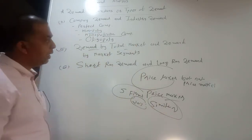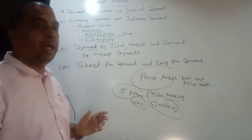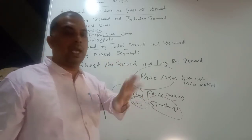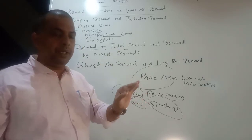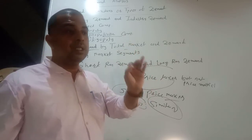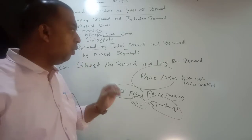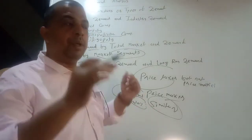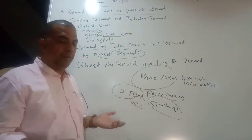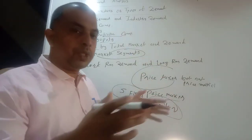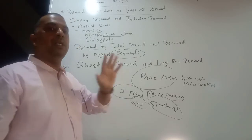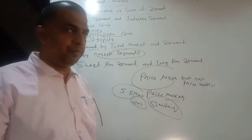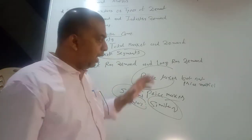Next: demand by total market and demand by market segment. Demand by total market means the total demand for the product. Demand by market segment means demand in different segments. The firm is not only interested in knowing the total demand for the product, but also in knowing demand in different market segments — different regions of the country, different uses of the product, different distributive channels. For example, Pepsi and Coca-Cola are multinational companies selling their products in many countries of the world.